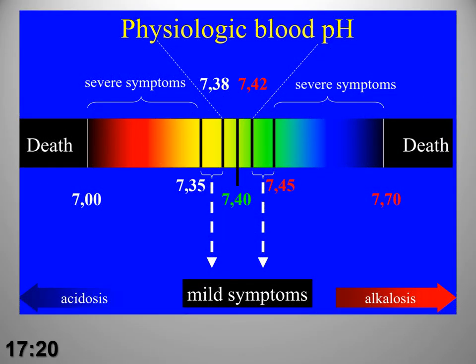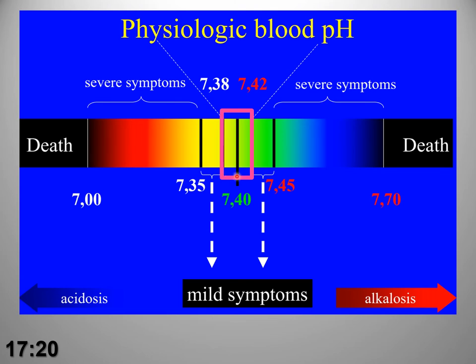Blood pH is a near-perfect example of a homeostatic window — maintained in a relatively narrow range of about 7.35 to 7.45. If we begin to get higher, we call that alkalosis, and we begin to see symptoms even above 7.45. The same is true in the opposite direction: if we become more and more acidotic, symptoms become progressively severe. This area is a perfect example of a homeostatic window — a range of values that the organism attempts to maintain.